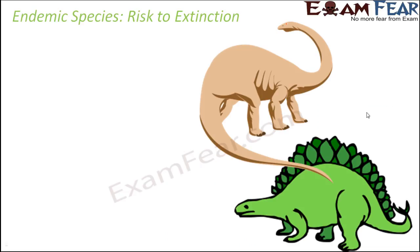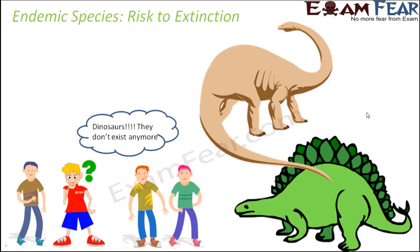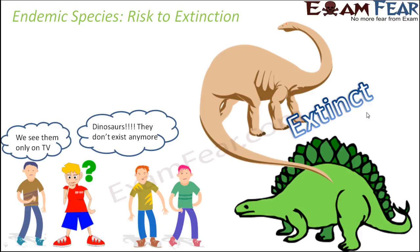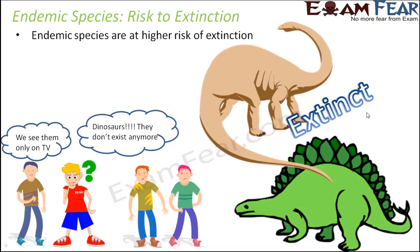Now, when we talk about endemic species, one species that commonly comes to mind is the dinosaurs — we say they do not exist anymore. We just see them in movies and fictional stories, but they do not exist anymore because they have become totally extinct; not a single organism of that kind exists today. Endemic species are at higher risk of extinction because they are located within a small geographic area, so if something goes wrong in that area, the endemic species might become extinct.